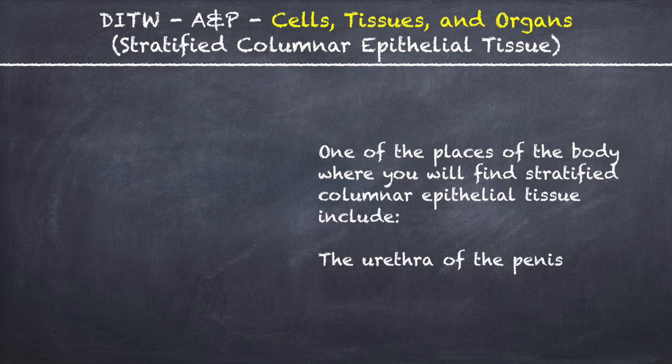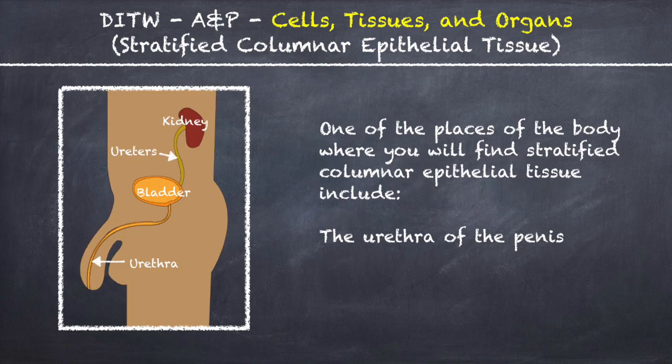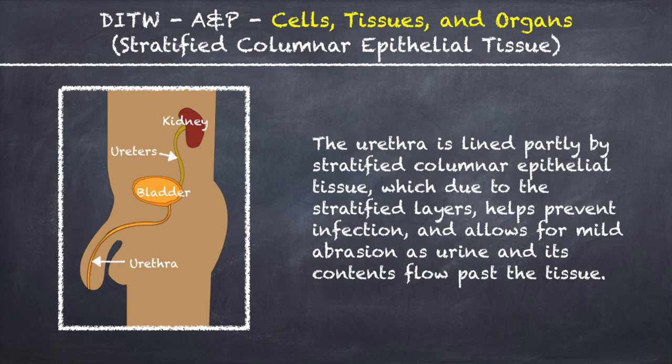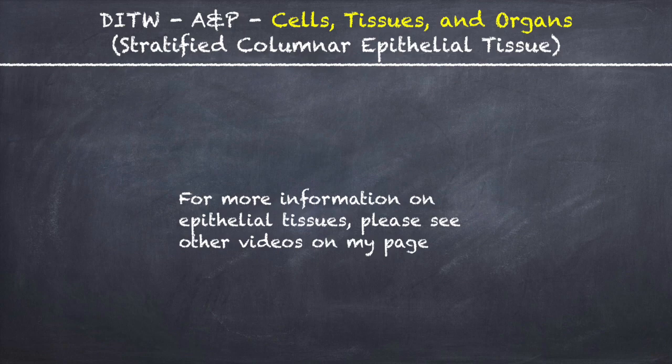One of the places of the body where you will find stratified columnar epithelial tissue is the urethra of the penis. The urethra is the passage in the penis starting from the urinary bladder that guides urine out of the body through the opening of the penis, also called the meatus. The urethra is lined partly by stratified columnar epithelial tissue, which due to the stratified layers helps prevent infection and allows for mild abrasion as urine and its contents flow past the tissue.